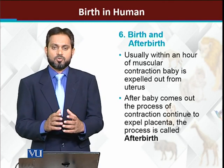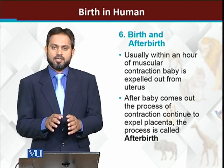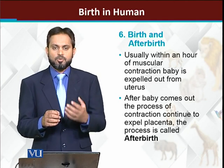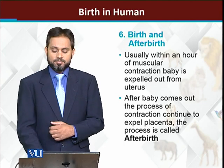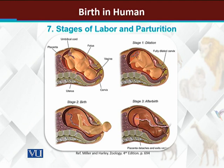Once the baby has come out, birth is complete. Now the second event starts — muscular contractions continue, and the placenta also comes out from the mother's body. Placenta کے باہر آنے کو ہم after birth کہتے ہیں۔ Overall, we can divide the process of birth into three stages: first is the dilation stage, in which the vagina dilates and pubic bones displace slightly; second is birth, during which the fetus comes out; and third is after birth, during which the placenta comes out.